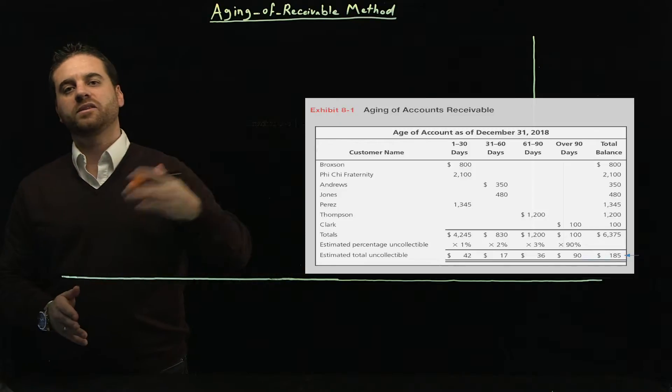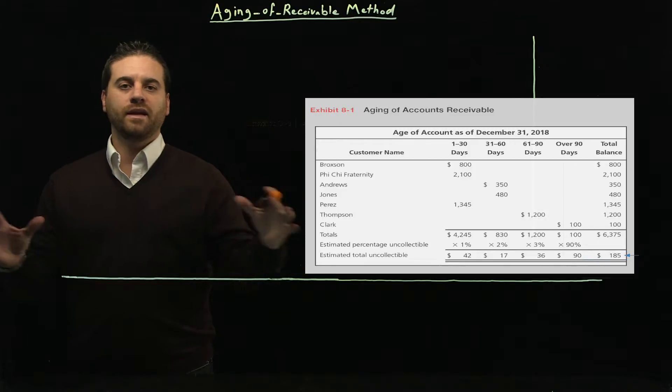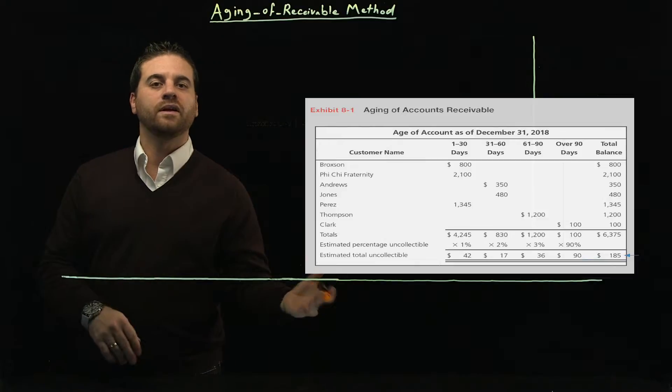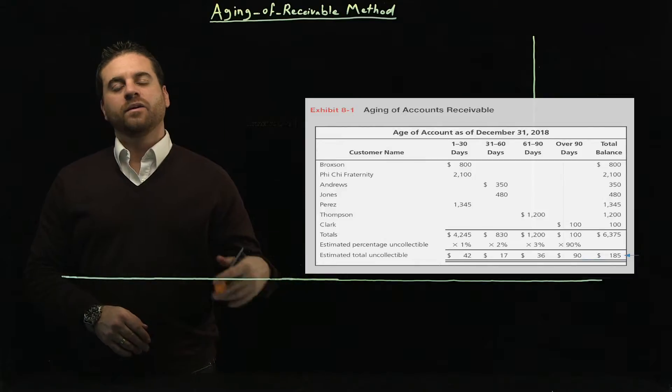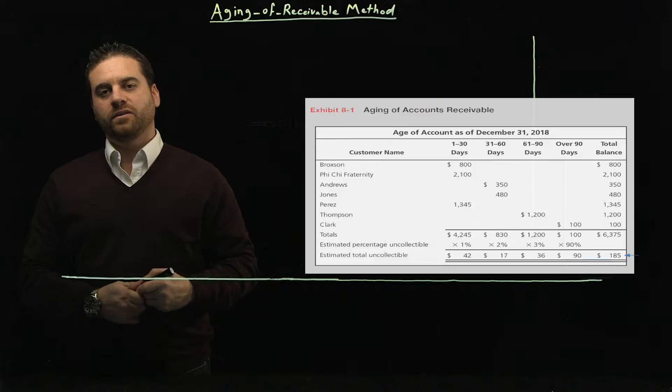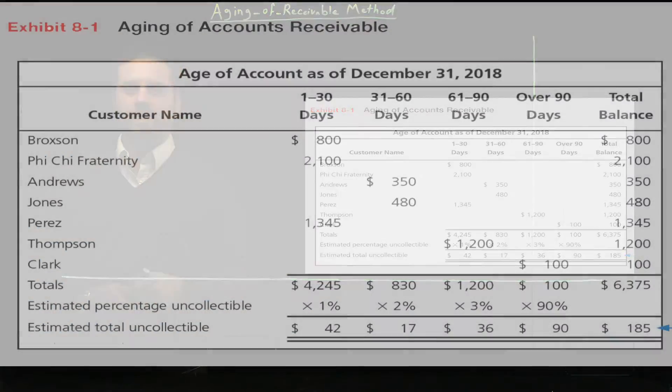Every group has a different percentage. And then we're going to multiply these percentages by the amounts and then add them together to find out the total of the ending balance for AFDA, which is the total balance of expected uncollectible amount at the end of the year.